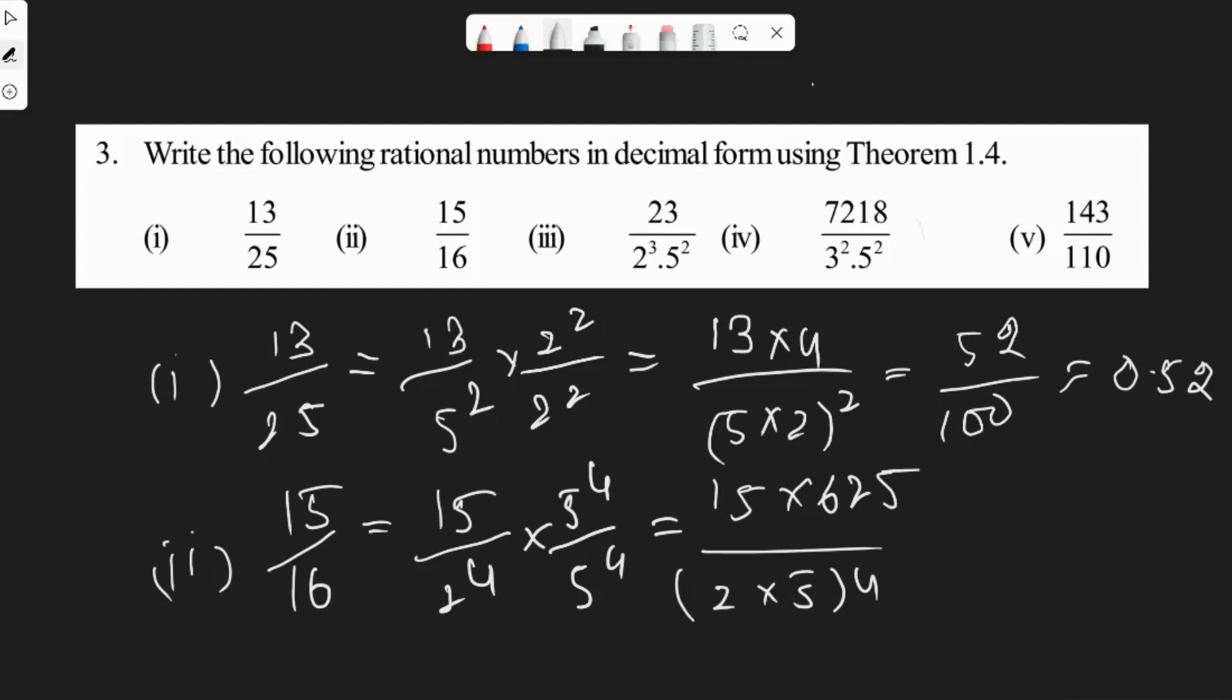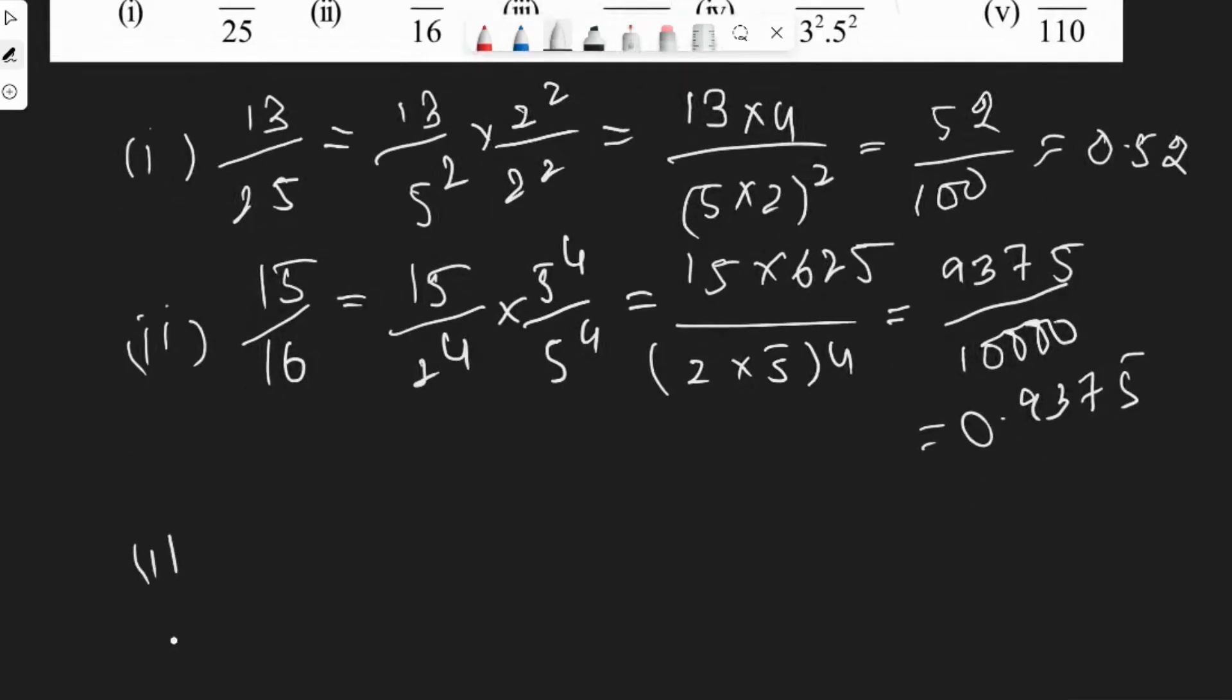15 into 625 is 9375 by 5 into 2 into 5 is 10, and 10 power 4 is 10,000. So we'll get 0.9375.